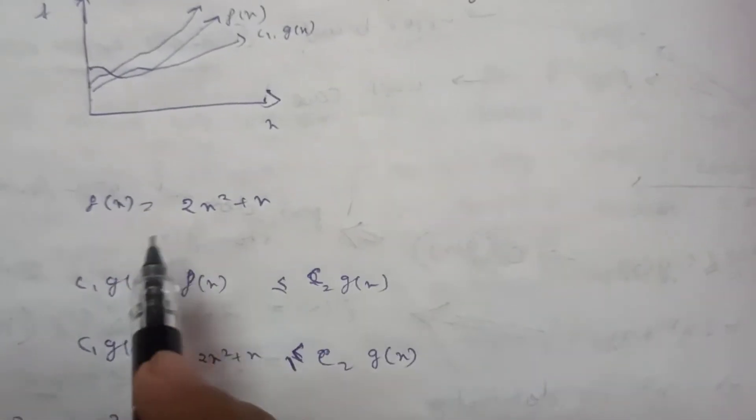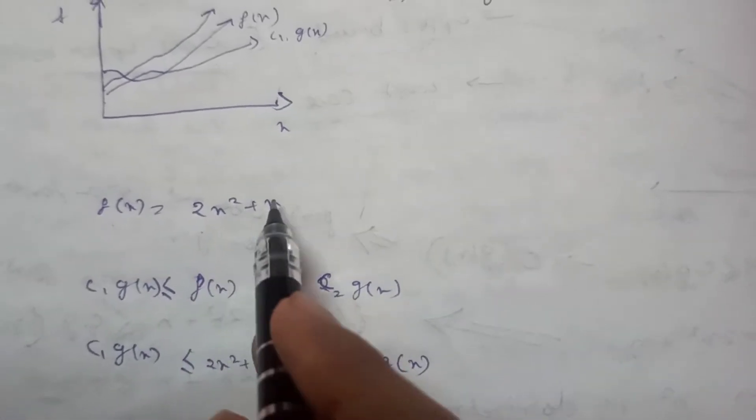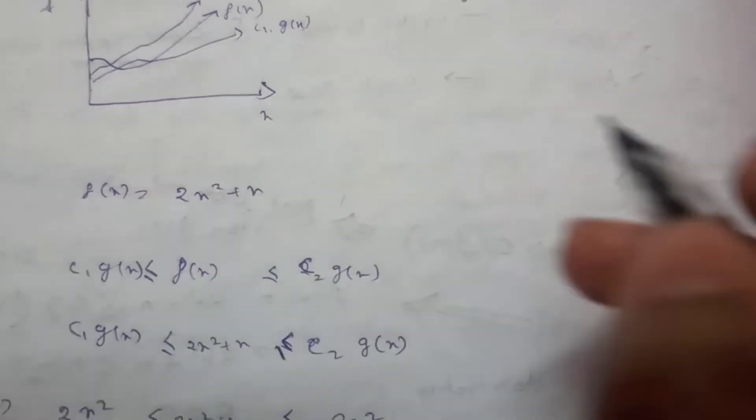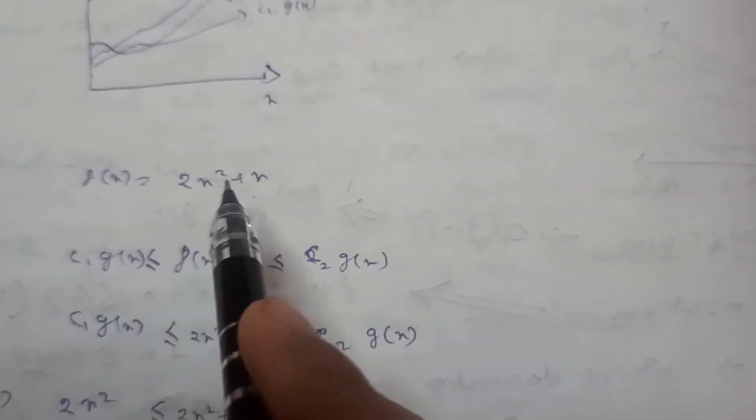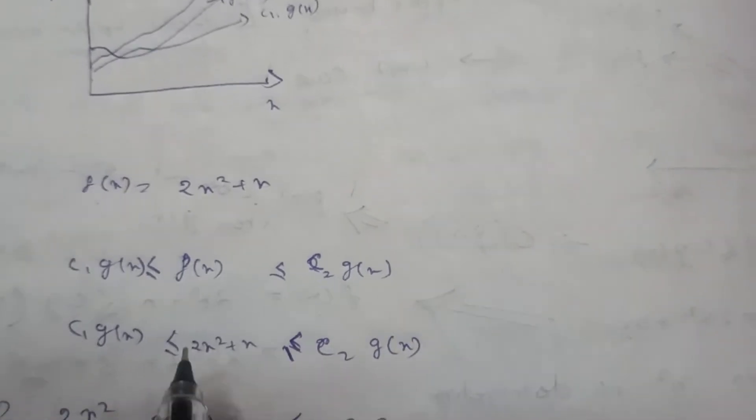Suppose there is a given example that f of n equals 2n squared plus n. So our most dominant term here is n squared. So I will do just the similar thing which I have done for big O and big omega notations here.